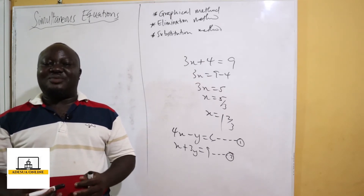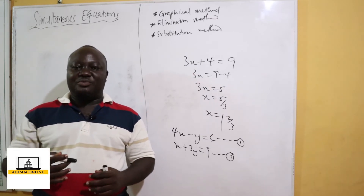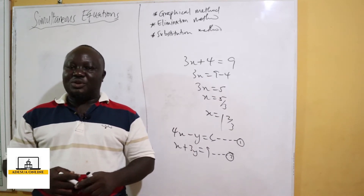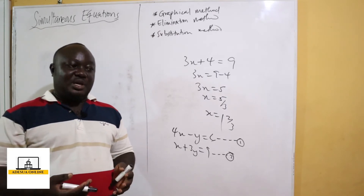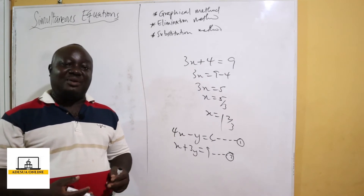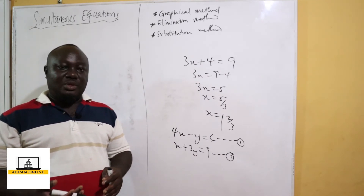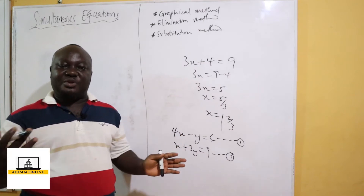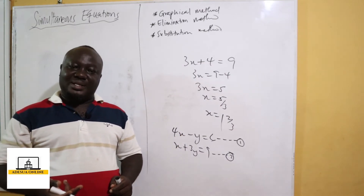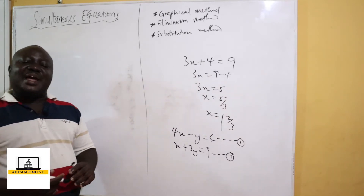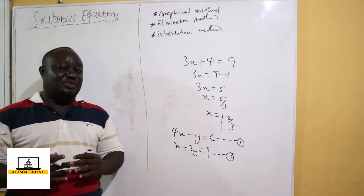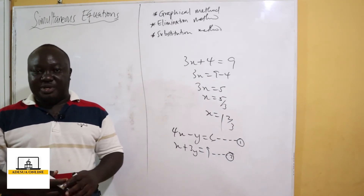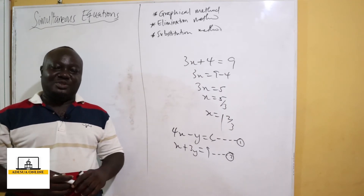Before we can solve this, we need to find values of x and y which correspond to our table, then plot them. When we find the point of intersection, we write them down as our solution. For any straight line, you only need to pick two or three points on the xy-plane, add x values, and find the corresponding y values. For any straight line, the gradient is always the same for any two points you pick.